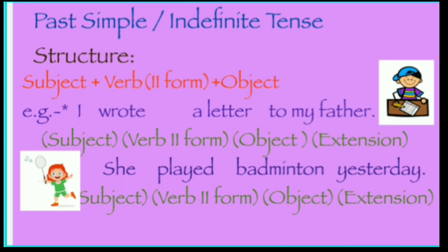Past simple, or past indefinite tense. Look at the structure: Subject + second form of the verb + object. For example, 'I wrote a letter to my father.' Here, 'I' is the subject, 'wrote' is the second form of the verb 'write,' and 'a letter to my father' is the object with extension.